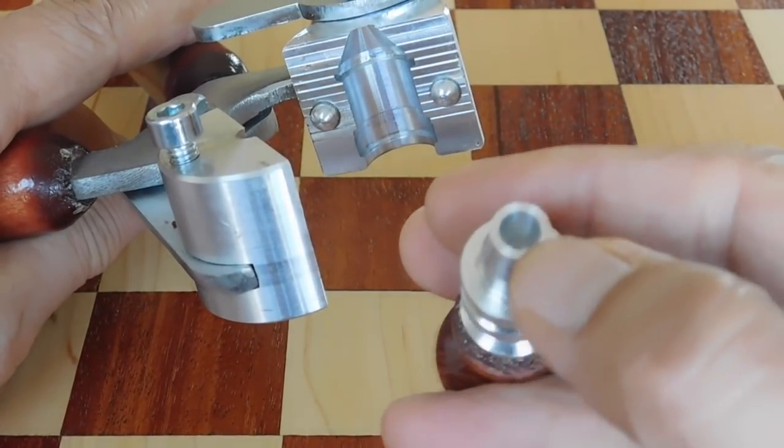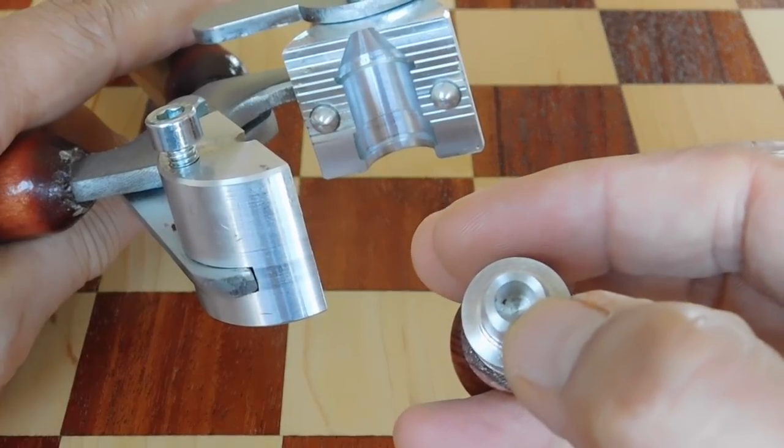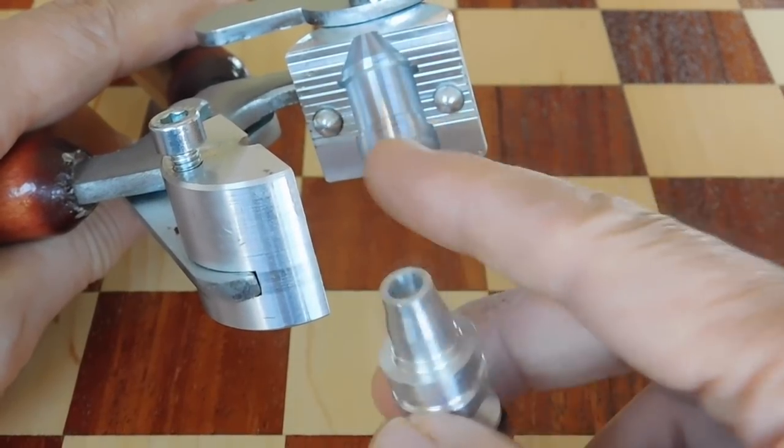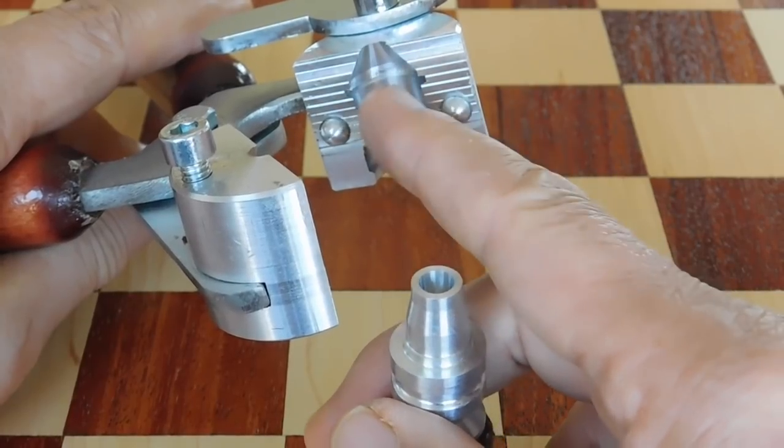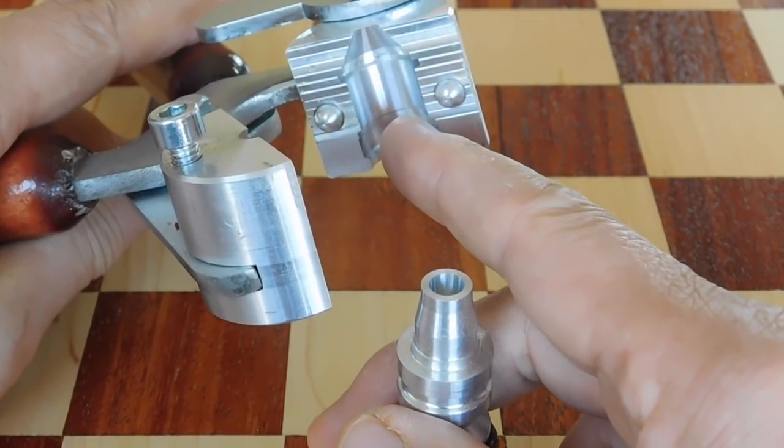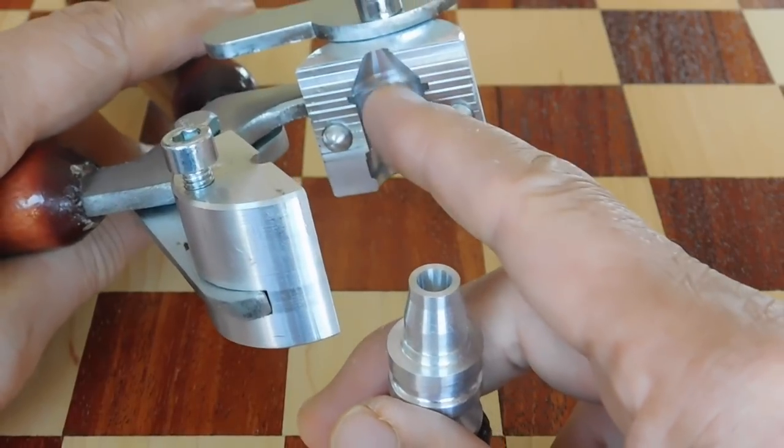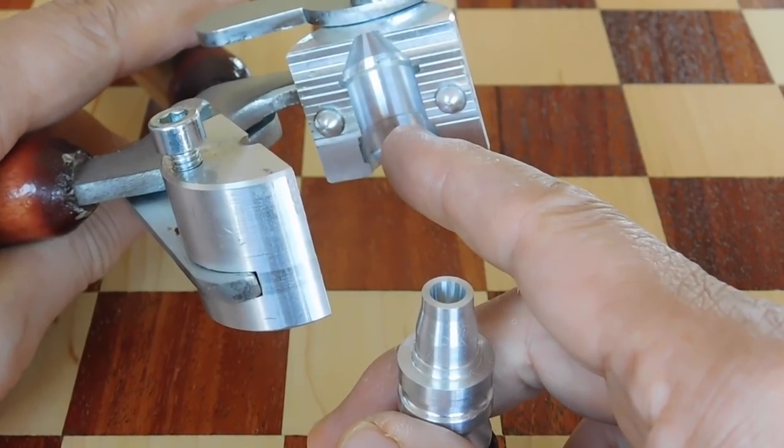But, interestingly, is the hollow core pin because what that does is when you cast it, you'll get a slug that is hollow base but it'll have a solid rod core of lead coming down into the hollow cavity.